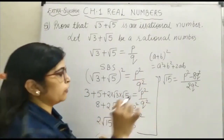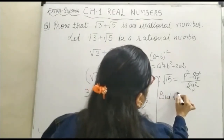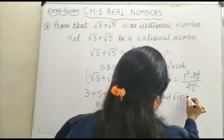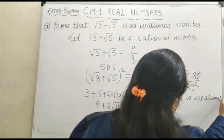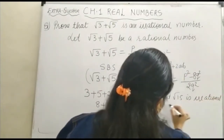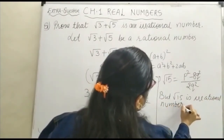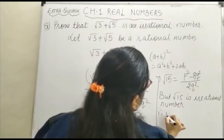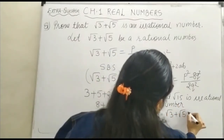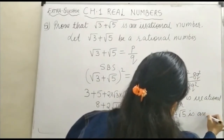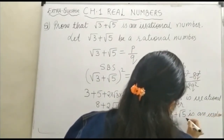This cannot be equal. We must note that √15 is irrational. Therefore, √3 + √5 is an irrational number.